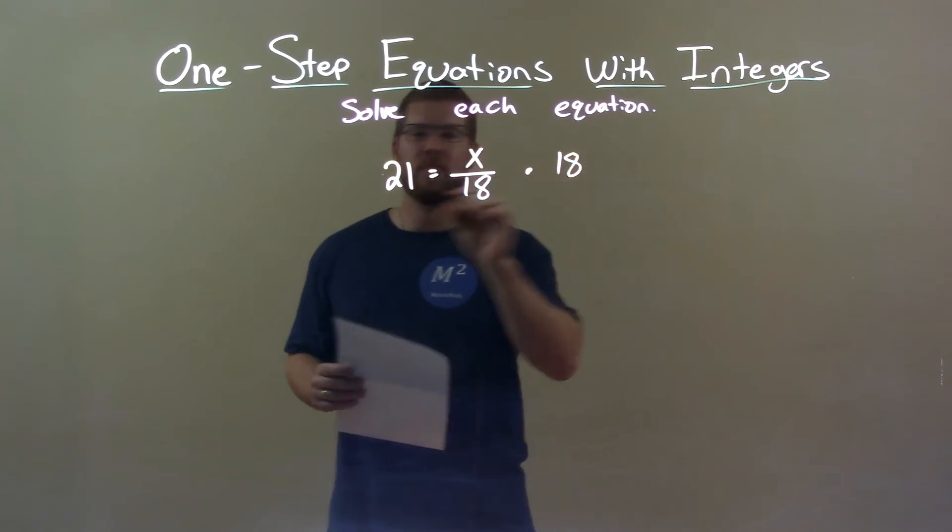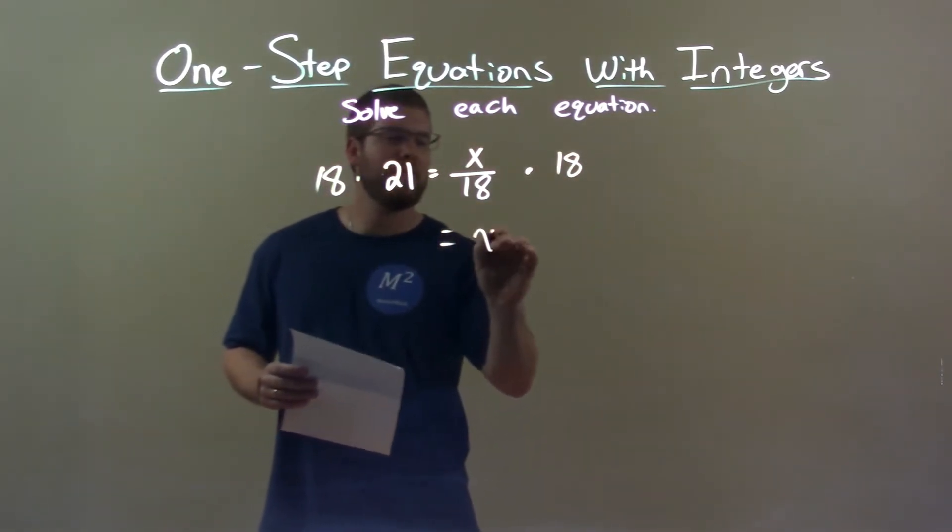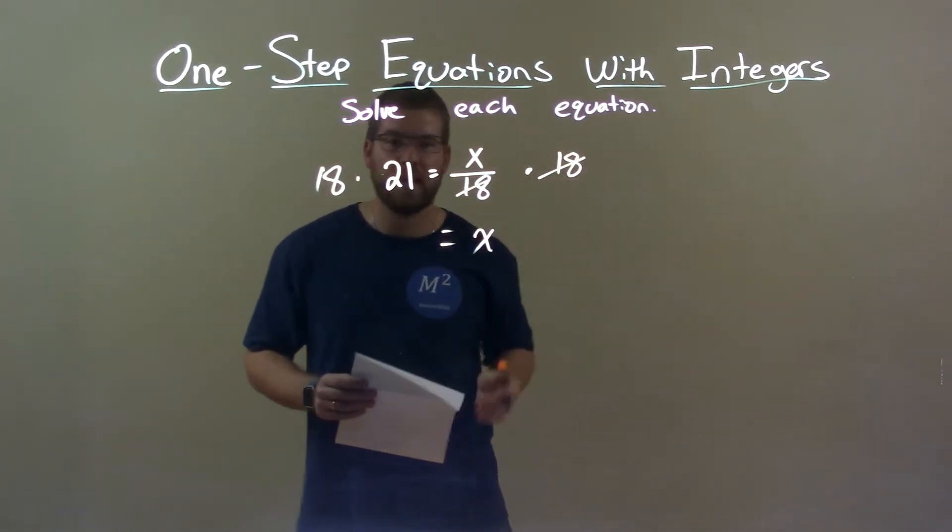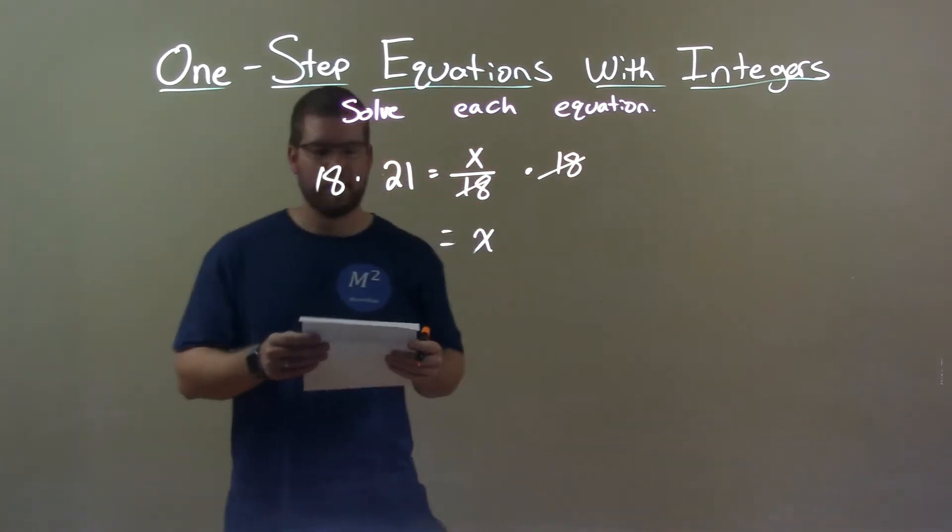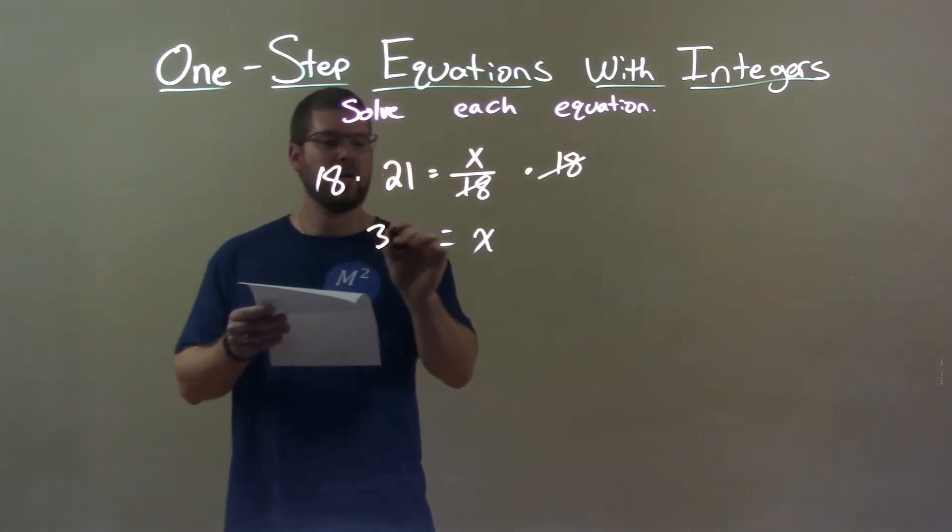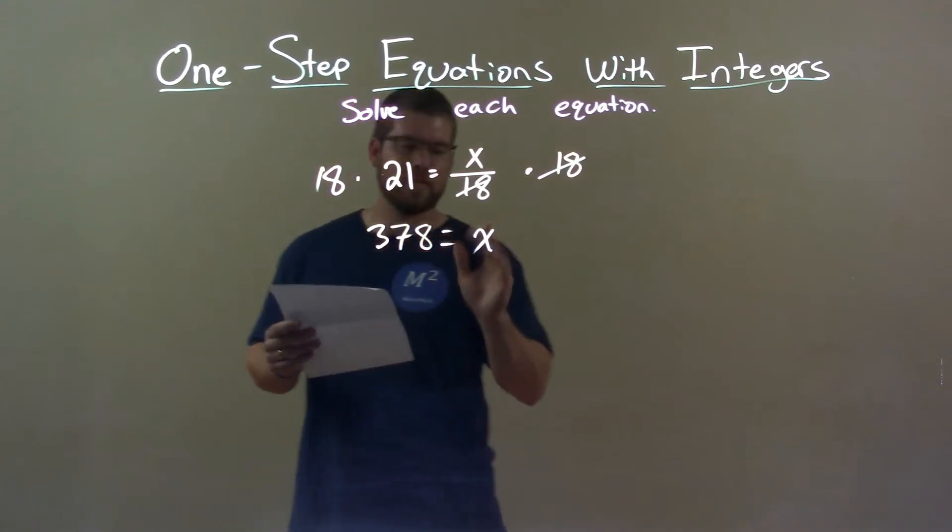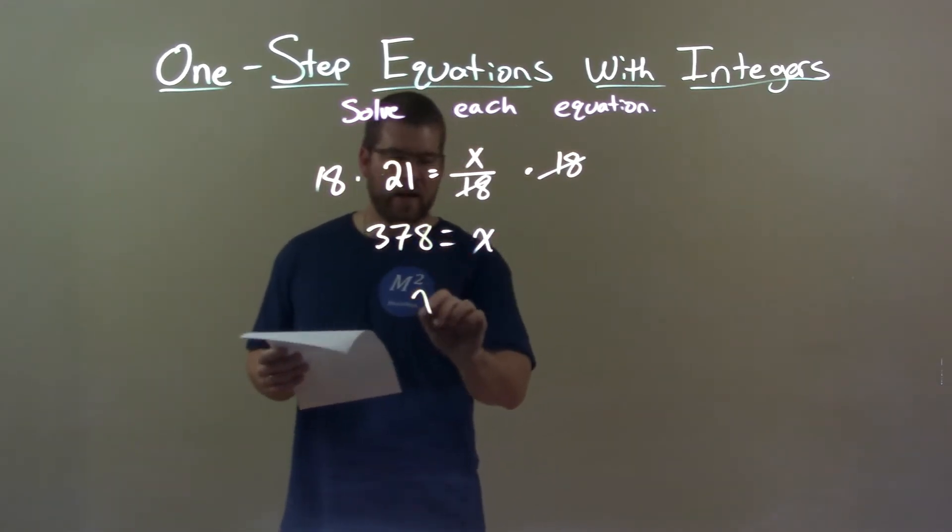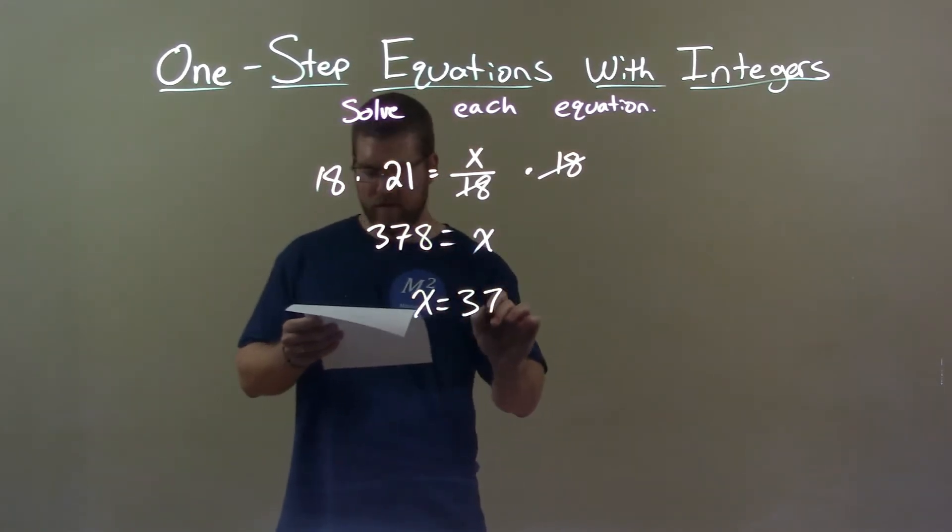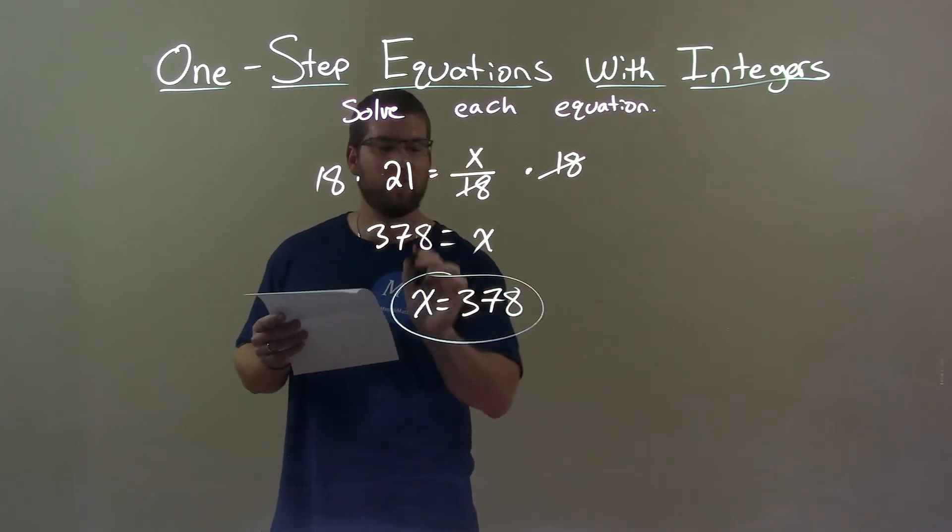I'll multiply both sides by 18. Now I have x by itself because these 18s will cancel on the right. But what's 18 times 21? That is 378. So we said that's equal to x. I can write x first, so we have x equals 378. And there we have our final answer.